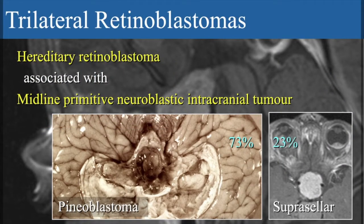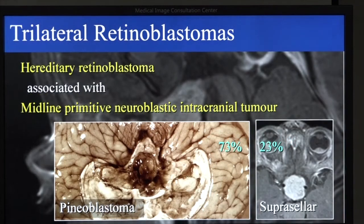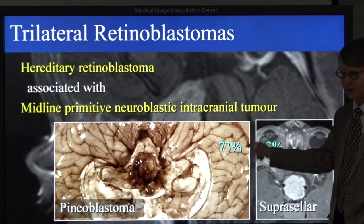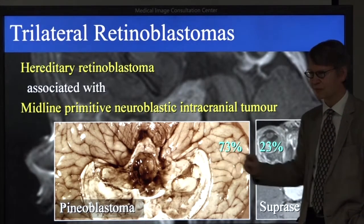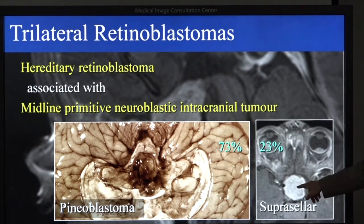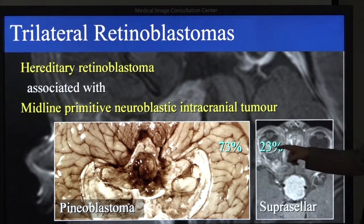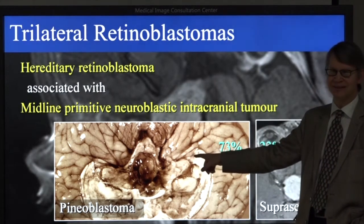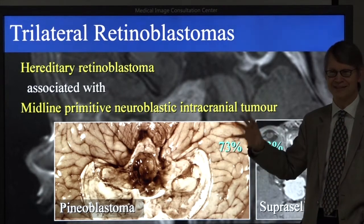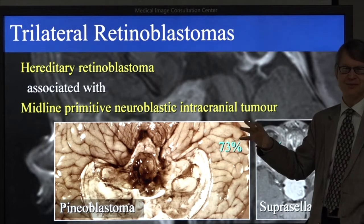What is a trilateral retinoblastoma? It's a retinoblastoma that can be bilateral, unilateral, or in very rare cases no retinoblastoma at all, combined with a midline primitive neuroectodermal tumor in the intracranial space. About three quarters of them are in the pineal glands, and one quarter is in the suprasellar location, close to the optic chiasm. This is probably because the pineal gland is a photosensitive organ, so we have there tissue that resembles the photoreceptors of the retina.